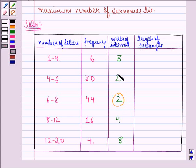The lengths of the rectangle are now modified to be proportionate to the class size 2. When width of interval is 3 then length of rectangle is 6. So when width of interval will be 2, length of rectangle will be 6 by 3 into 2 that is equal to 4.